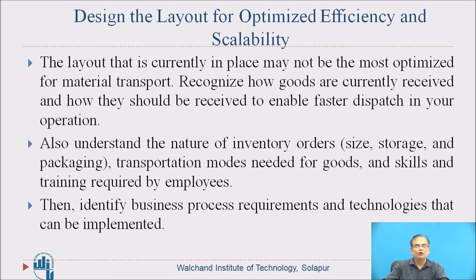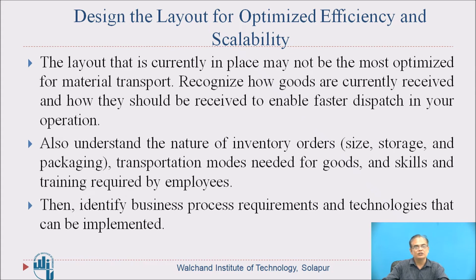Design the layout for optimized efficiency and scalability. The layout currently in place may not be the most optimized for material transport. Recognize how goods are currently received and how they should be received to enable faster dispatch. Also understand the nature of inventory orders — size, storage, packaging, transportation modes needed for goods, and skills and training required by employees. Employees should be given sufficient training. Then identify business process requirements and technologies that can be implemented.